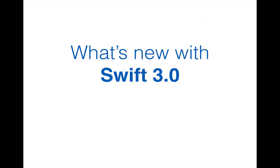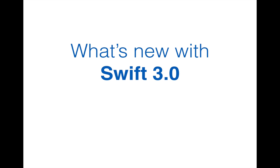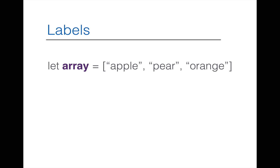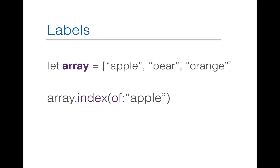There are many important changes coming with Swift 3.0, and we're going to see what's new. Starting with the label, we'll see an example with an array, which is a collection of three string objects. If you want to get the index position of the first string object, which is Apple, we would use the method `index`. This is the new shorter method name compared to Swift 2.2.